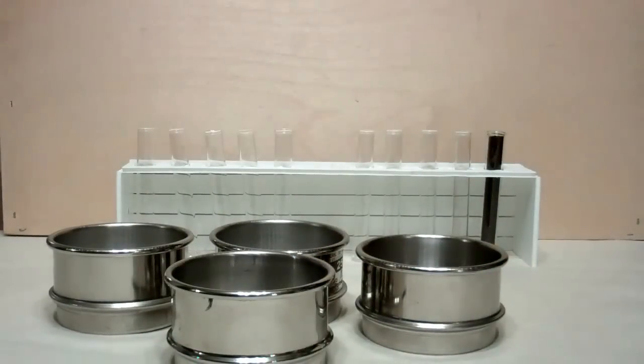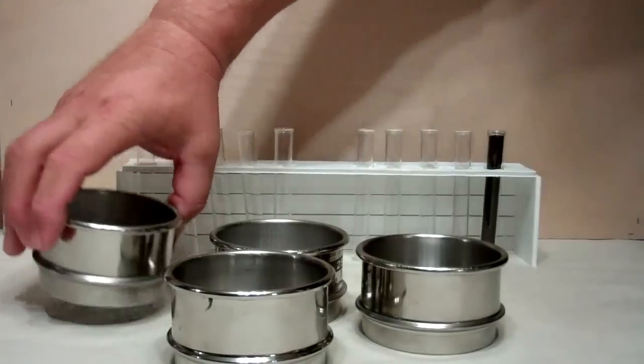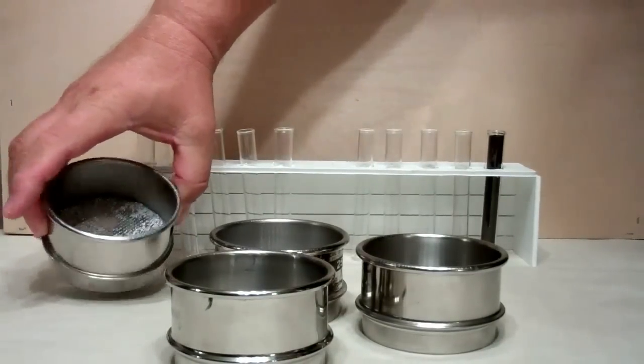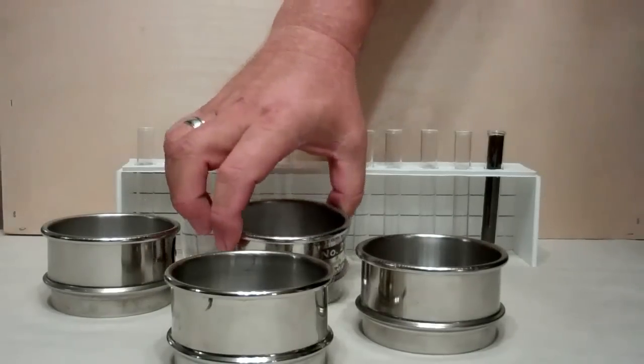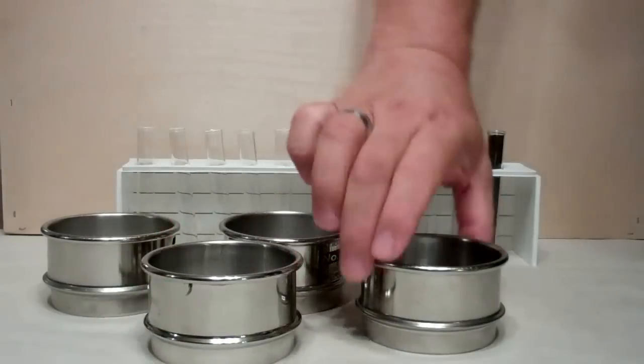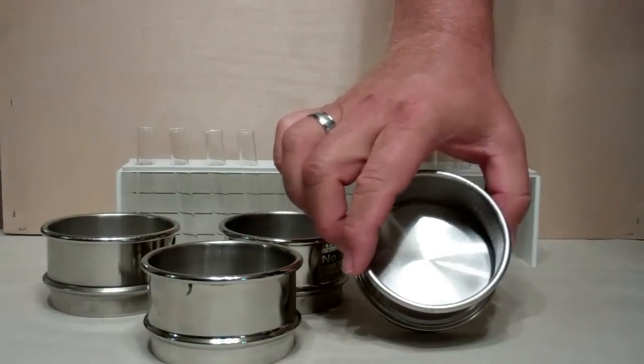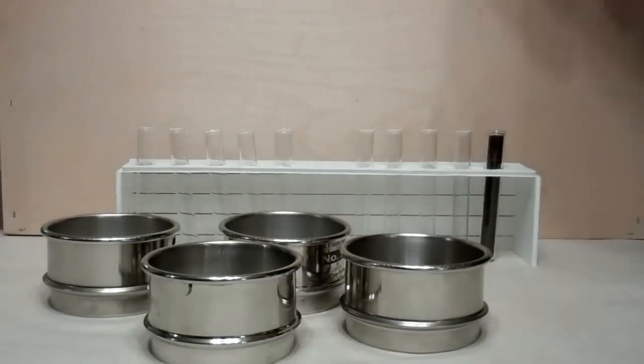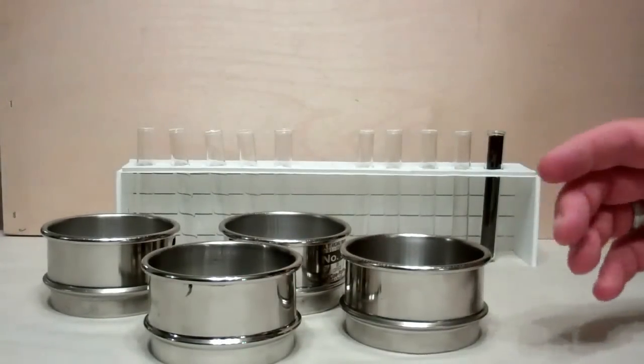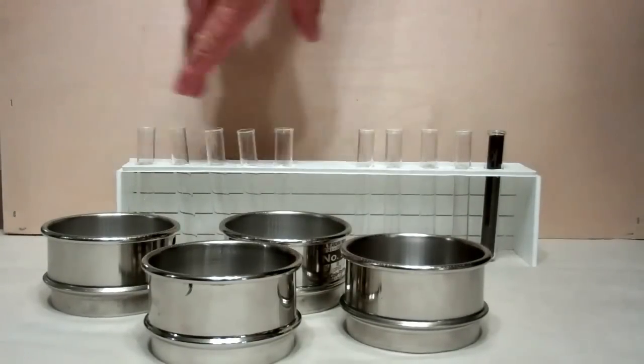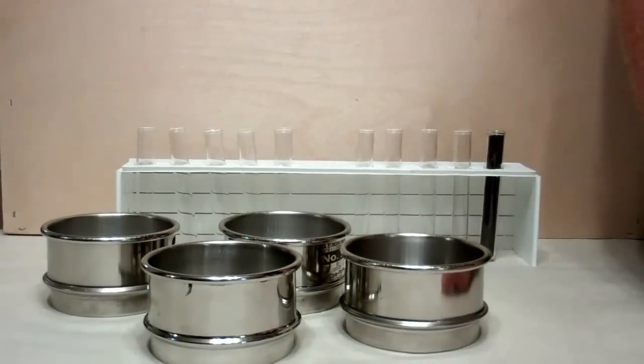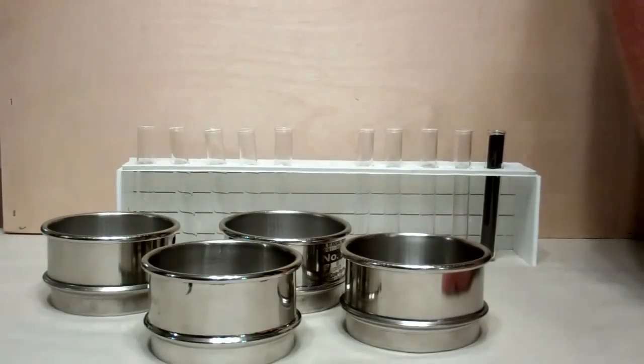We've now shaken the samples. As you can see, this is the coarse one with a lot of product there, the medium screen, fine screen, and then of course right on the bottom would be the dust that comes through. I'm now going to take a piece of paper or a funnel and fill these, and we'll come back and show you the distribution of those different screen sizes.